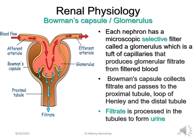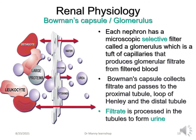Looking at renal physiology: each nephron has a microscopic selective filter called a glomerulus, which is a tuft or network of capillaries that produces glomerular filtrate from filtered blood. The Bowman's capsule collects the filtrate and passes it to the proximal tubule, then the loop of Henle, then the distal tubule, where the filtrate is processed to form urine. It's a selective filter which allows small molecules such as water, creatinine, cytokines, and urea to pass, but does not allow large proteins such as erythrocytes (red blood cells) or leukocytes (white blood cells) to pass.